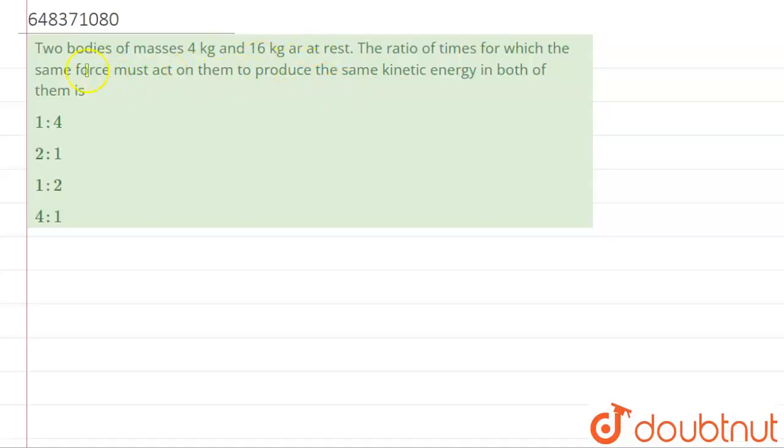Hello students, now you're going to see this question. The question says that two bodies of 4 kilograms and 16 kilograms are at rest. The ratio of times in which force, the same force must act on them to produce same kinetic energy in both of them is.